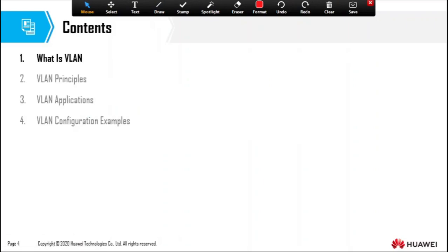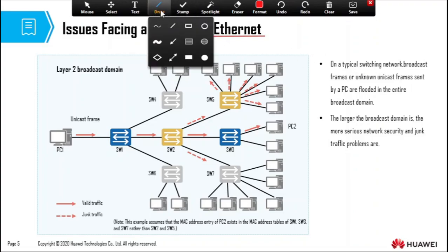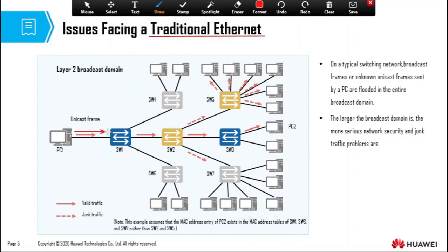We have different sections: What is a VLAN, then VLAN principles. Issues with the traditional Ethernet — on the traditional Ethernet, if we generate a unicast frame destined for PC2, PC1 wants to communicate with PC2. If the switch has the destination MAC address, it knows to forward it out through that interface alone. That's how switch1 processes that frame.